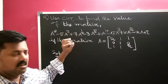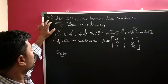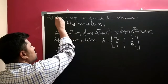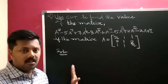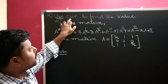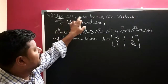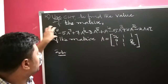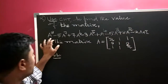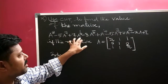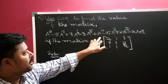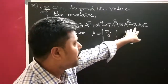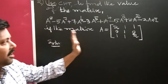In this problem, problem number 2, we use the Cayley-Hamilton theorem. There is no need to verify equal to zero. Using the Cayley-Hamilton theorem to find the value of a lengthy matrix — we have to find the value of the matrix A power 8 minus 5A power 7 plus 7A power 6 minus 3A power 5 plus A power 4 minus 5A cubed plus 8A squared minus 2A plus I, where A is the given matrix.